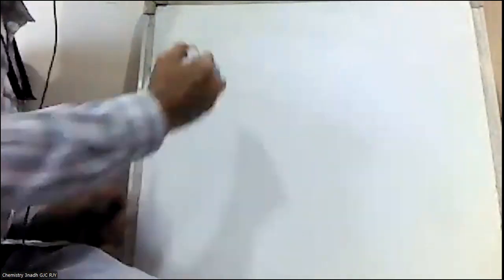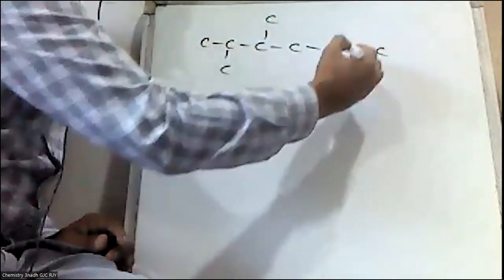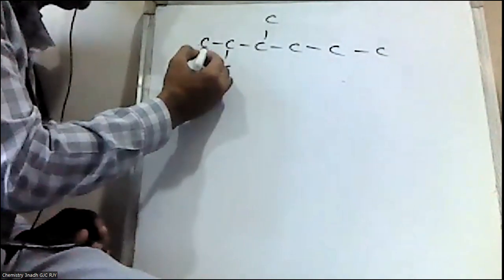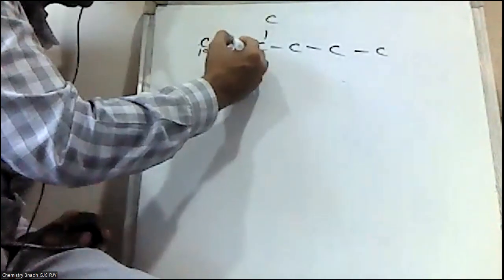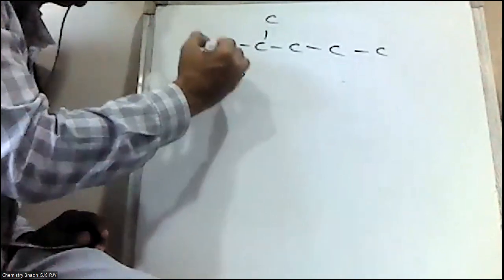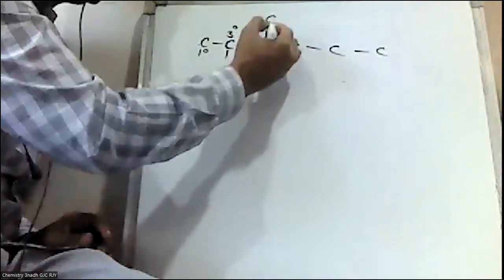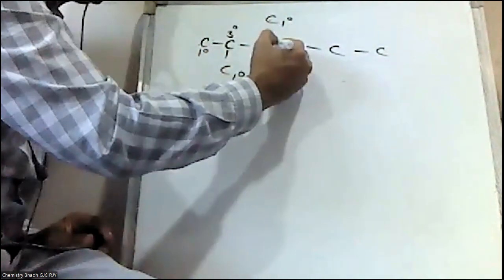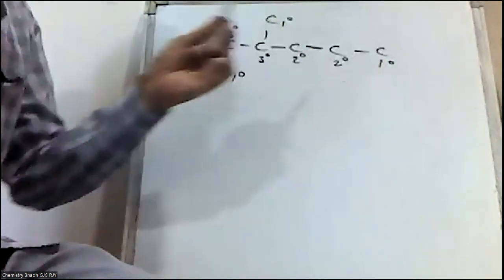Taking one more example: here the carbon is attached to only one carbon, that's why it is primary carbon. Another carbon is also attached to only one carbon — also primary carbon. But this carbon is attached to one, two, three — that's why it is tertiary carbon. Another carbon is also attached to one, two, three — tertiary carbon. One carbon is only attached to this carbon — primary carbon. Here carbon is attached to two other carbons — secondary carbon. This is also secondary carbon. This is also primary carbon, attached to only one carbon.